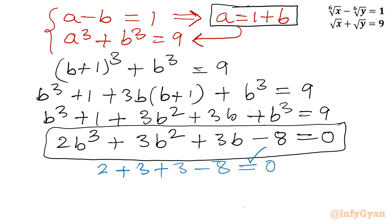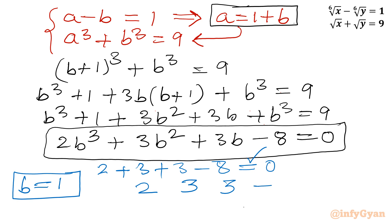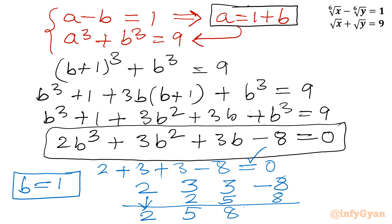That means b equals 1 is a straight-away basic solution. So I can use the synthetic division method. Writing all the coefficients of the cubic equation: 2, 3, 3, minus 8. The leading coefficient stays as 2; 1 times 2 is 2, giving 5; 1 times 5 is 5, giving 8; 1 times 8 is 8, remainder 0. So b equals 1 as a solution is confirmed.